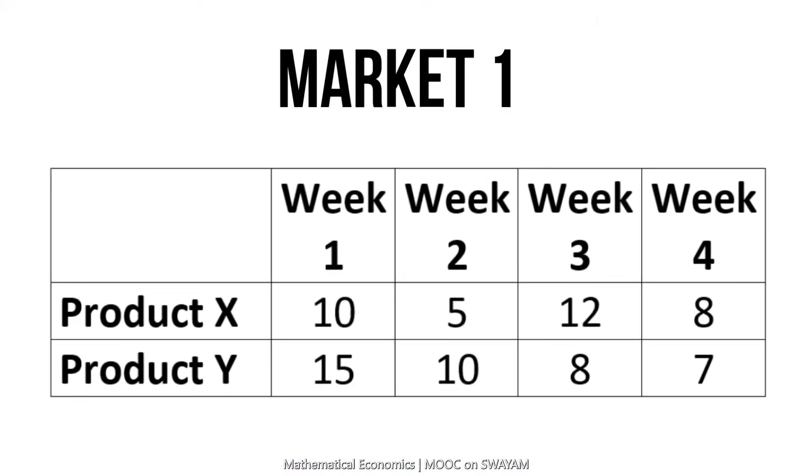The first row shows the units of product X sold in week 1 to week 4. The second row shows the units of product Y sold in week 1 to week 4.